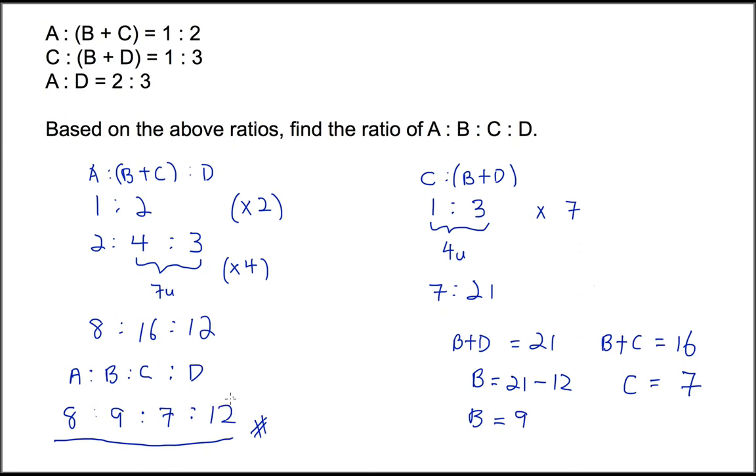In order to be very sure that this is the answer, we need to put it back into the original equations to test them out. A is to B plus C. A we have 8. B plus C will be 9 plus 7 is 16. Is it equals to 1 is to 2 divided by 8? Yes, 1 is to 2. Then use the second equation. C is to B plus D. C we have 7. B plus D is 9 plus 12 which is 21. Is it equals to 1 is to 3? Yes, you divide by 7 is 1 is to 3.